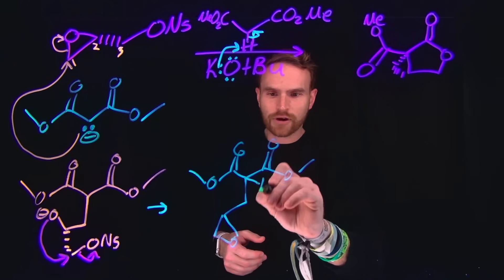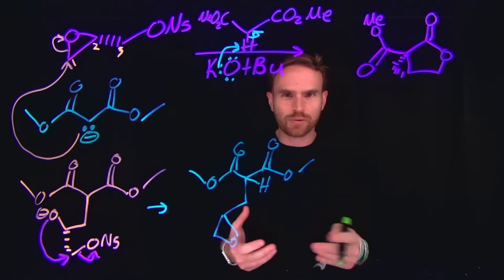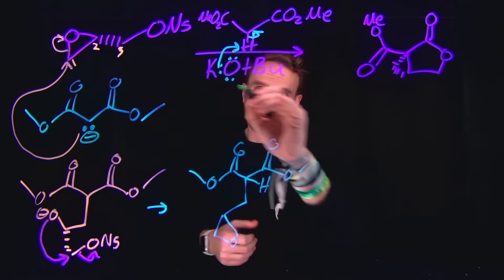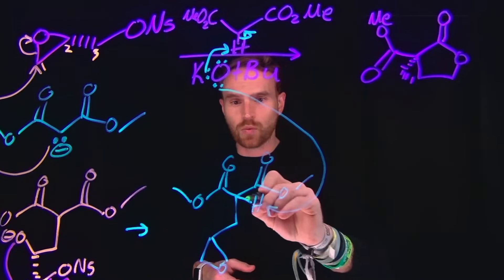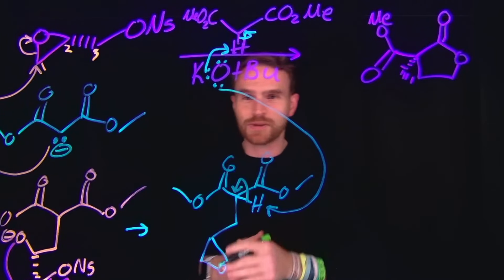Now importantly, we still have an alpha carbon position which is susceptible to deprotonation, and we still have plenty of base around. That base will come and deprotonate that alpha carbon position to reform another enolate at this position.